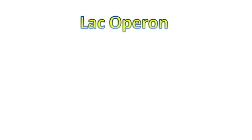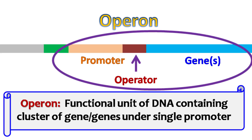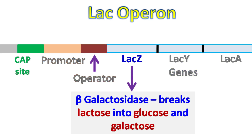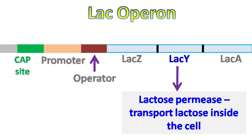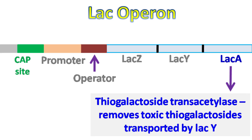Now let's talk about the lac operon. An operon is a functional unit of DNA containing a cluster of genes under a single promoter. The lac operon has three genes: lacZ, lacY, and lacA. The lacZ gene encodes beta-galactosidase enzyme, which breaks lactose into glucose and galactose. The lacY gene encodes lactose permease enzyme, which transports lactose inside the cell. The lacA gene encodes thiogalactoside transacetylase enzyme, which helps in the removal of toxic thiogalactosides.